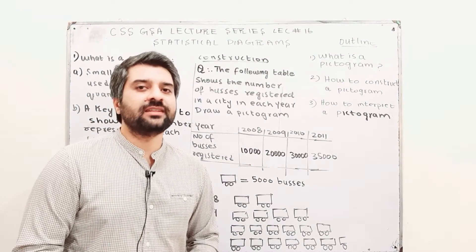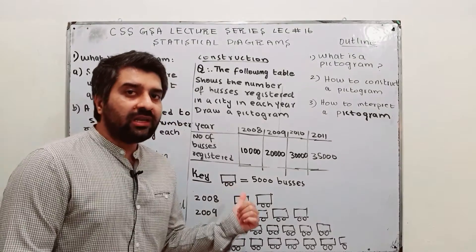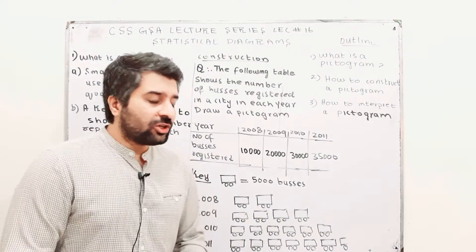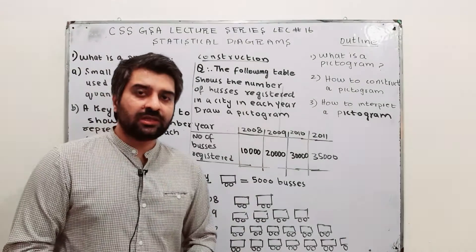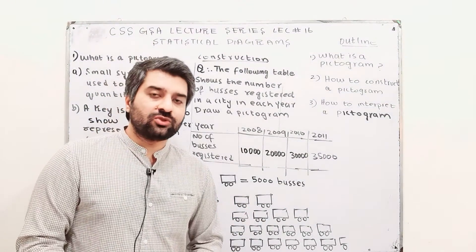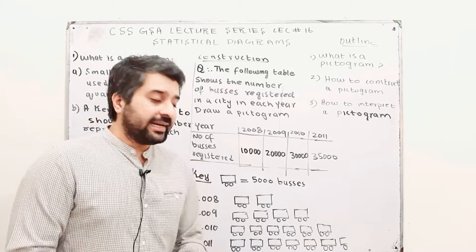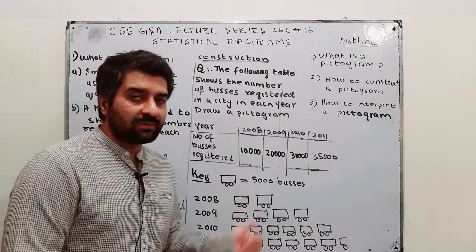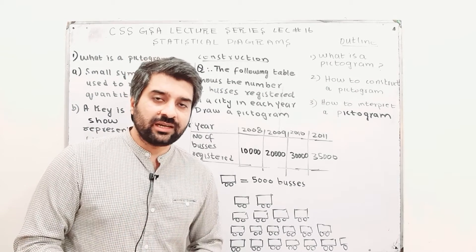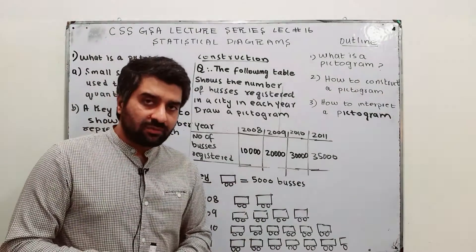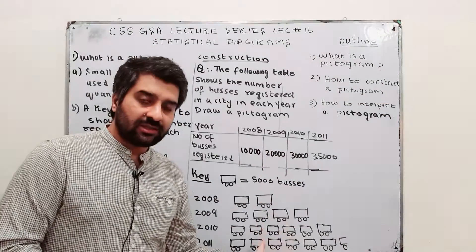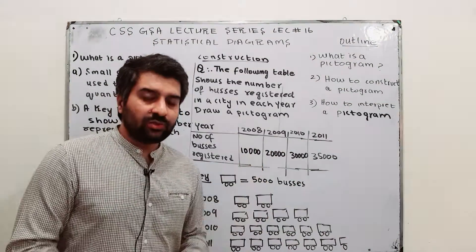To draw the pictogram, first you select a key. You are not going to draw 10,000 buses against year 2008 — that is not possible. So I will use the key that one single bus symbol represents 5,000 buses. This key is selected by myself. Using this key, I am going to display all of the data.